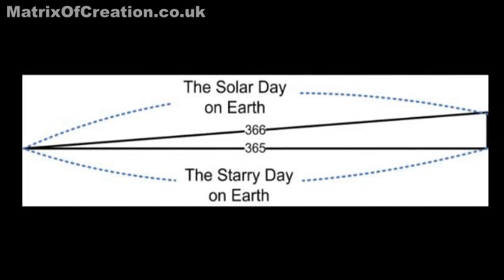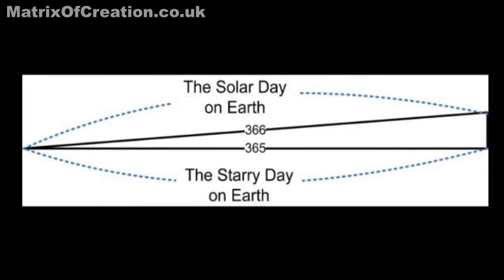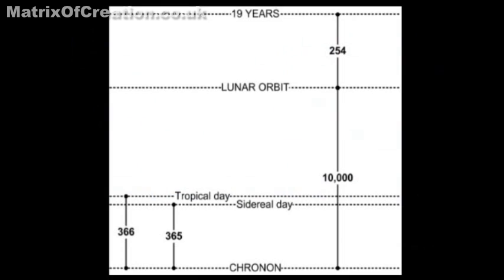This unit of time, which I call the chronon, also divides into the lunar orbit 10,000 times. We therefore see that a unit of time formed by the rotation of the Earth and the movement of the Sun divides into the lunar orbit, which then in turn divides into the 19-year period.